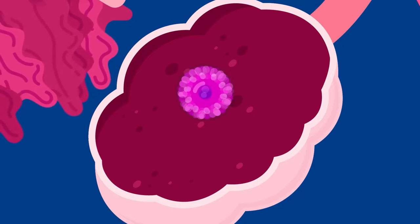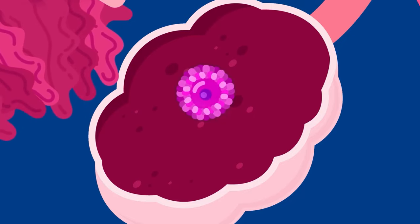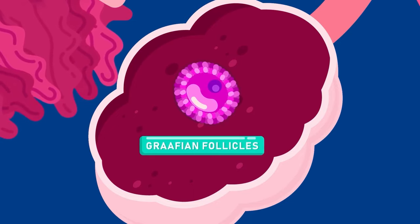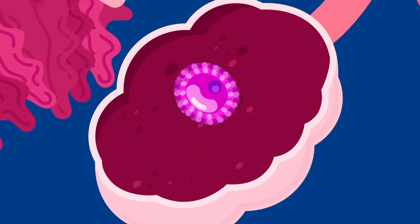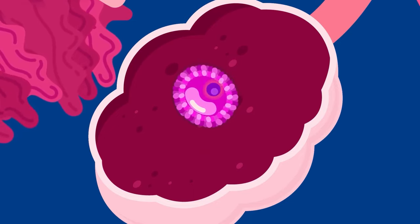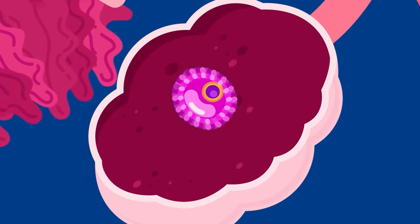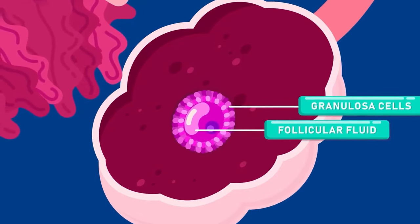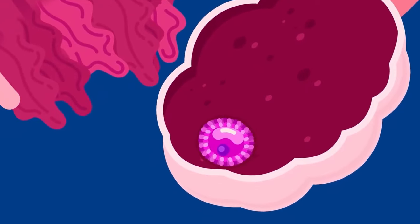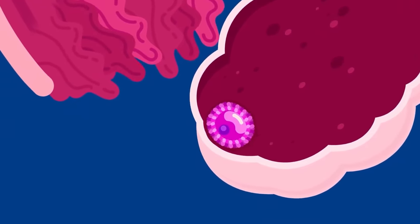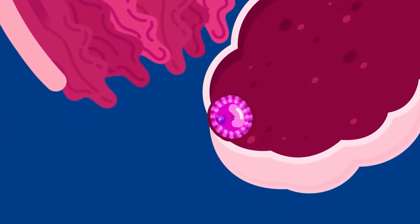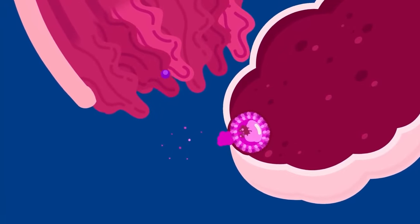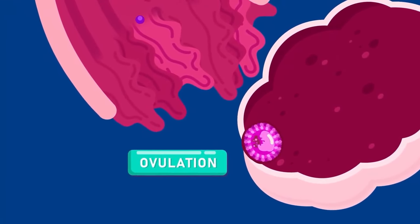The primary follicle may grow to maturity, and a mature follicle is known as a Graafian follicle. The Graafian follicle contains an egg surrounded by follicle cells and a fluid-filled space. At about the 14th day from the beginning of menstruation, the Graafian follicle ruptures and releases the egg into the oviduct funnel. This is called ovulation.